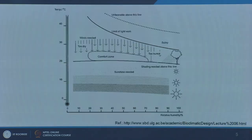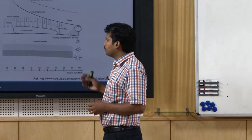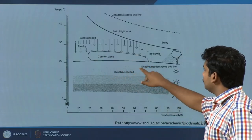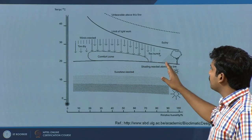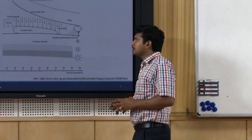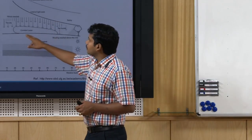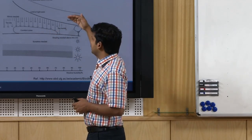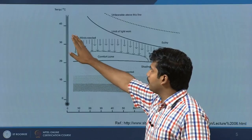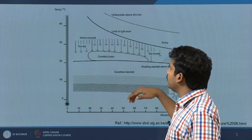Beyond certain limits it is unbearable. This is a commonly referenced, fine-tuned bioclimatic chart proposed by Victor Olgyay. The comfort zone is here; above a certain line shading is needed for the building. You can draw many interesting inferences relating to your building. Primarily this chart is for outdoor use — we will look at indoor shortly. For outdoor, beyond the comfort zone you need shading from trees or artificial shades; in the dry region it is too dry, here it is too humid, and above this line good air movement is needed.